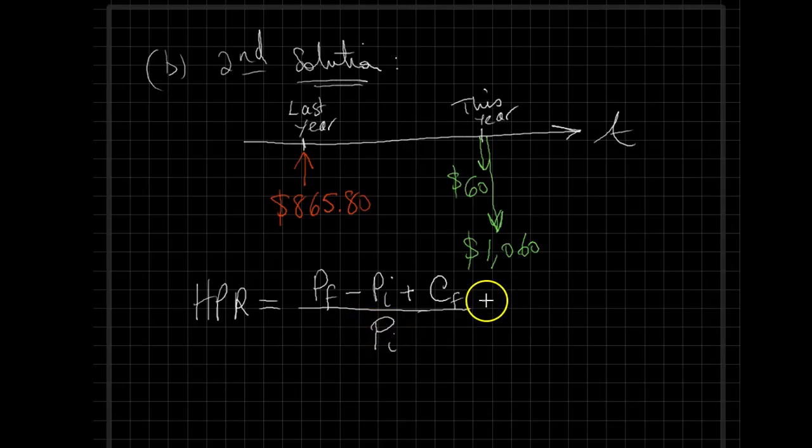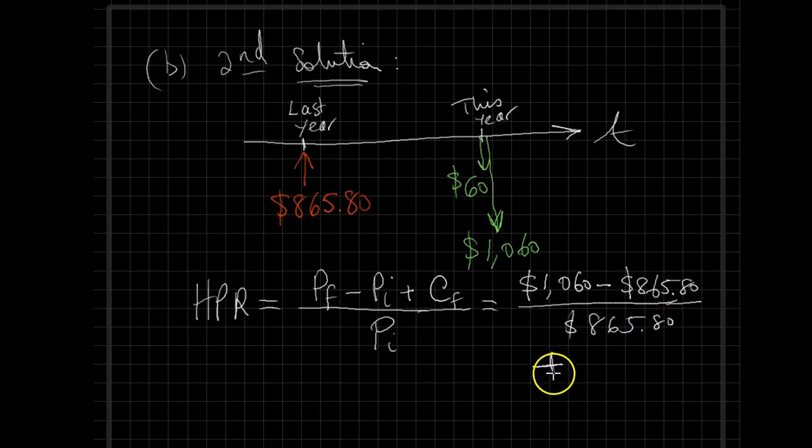Looking from this point of view, we know that currently it is selling at $1,060. We need to subtract the initial price that we paid, in this case $865.80, divided by the initial price $865.80, and in addition I need to include the coupon yield of $60, and the denominator being the same. This calculation should yield the same result as the previous case.